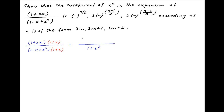Note that the denominator is equal to 1 plus x cube, and the numerator is equal to 2x square plus 3x plus 1. Therefore, the given expression can be written as 1 plus 3x plus 2x square multiplied by 1 plus x cube whole raise to the power minus 1.